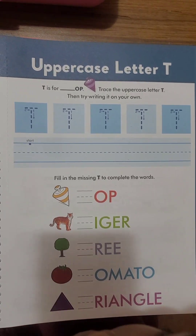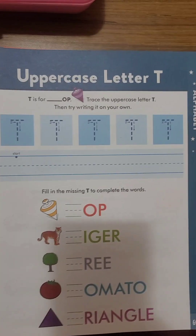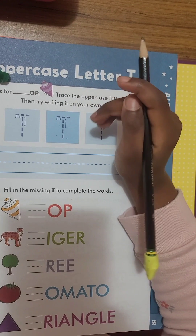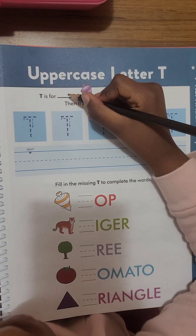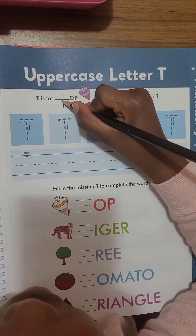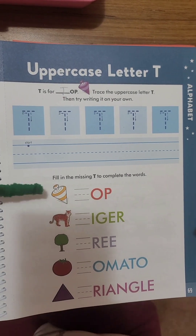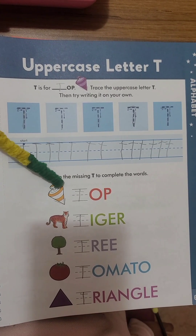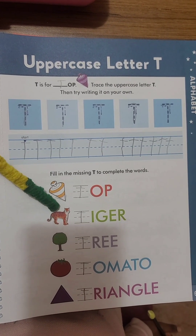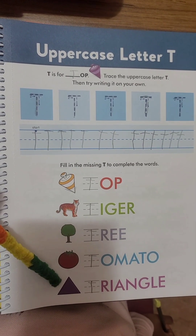So we're going to do uppercase letter T and lowercase letter T. T is for top. All right, put your T there. We're going to trace the uppercase letters. Then you're going to write it all. Then we're going to do a little activity. We've got the words: T, top, tiger, tree, tomato, triangle.